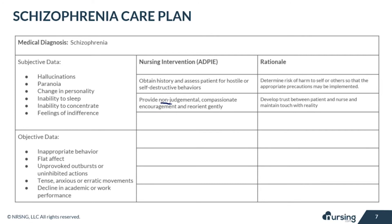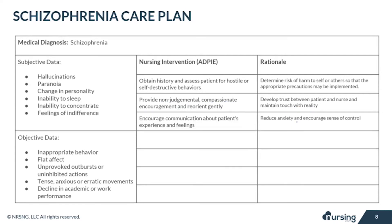Provide non-judgmental, compassionate encouragement and gently reorient the patient. It's important to develop trust between you and the patient — they're feeling paranoid and may feel like they can't trust anybody. Just be there for them, listen, and help them maintain a connection with reality.